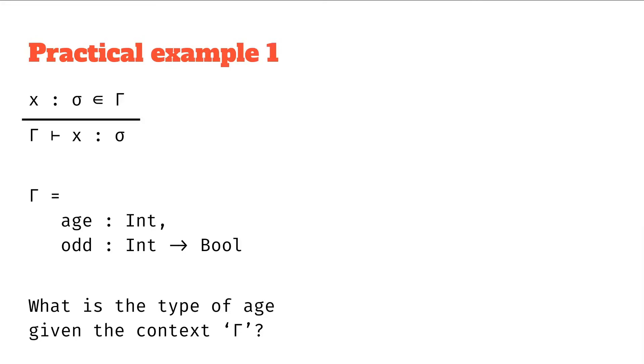So we can remember our rule here where we have x as type sigma is in the context, means that from the context, it follows that x as type sigma.